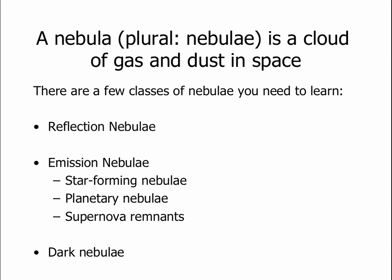When we can see this interstellar material, we call it a nebula — the plural is nebulae — and a nebula is just a cloud of gas and dust in space. Nebula is Latin for cloud. There are many different types and causes of nebulae. We're going to talk about a few of them in the next several slides.